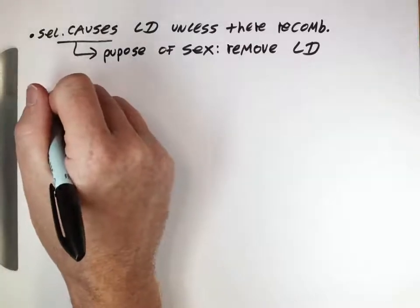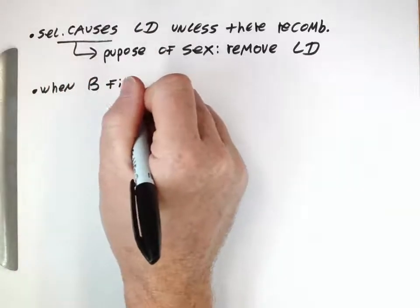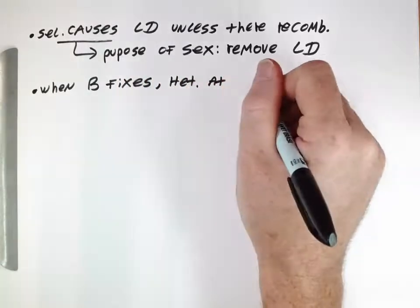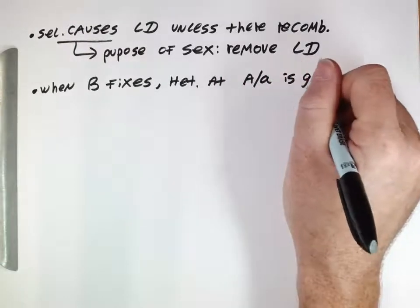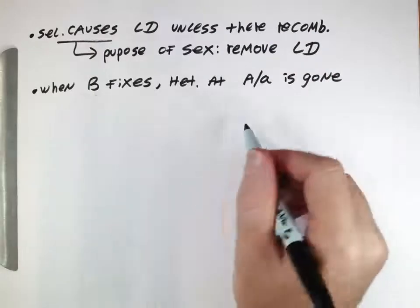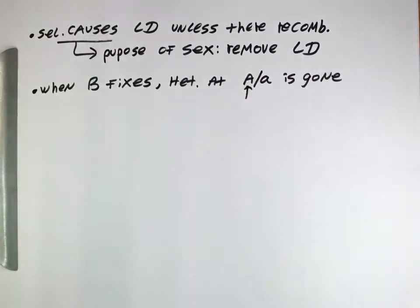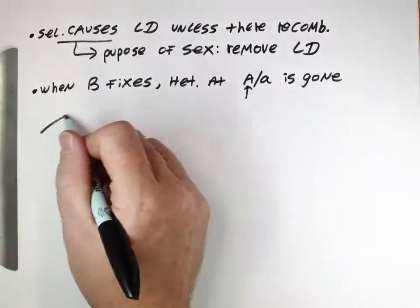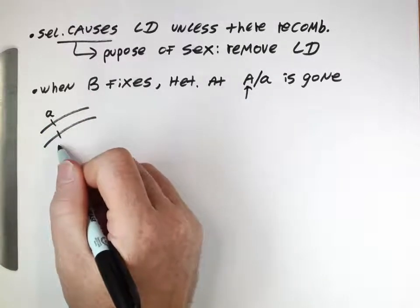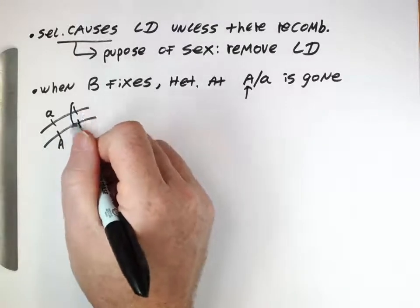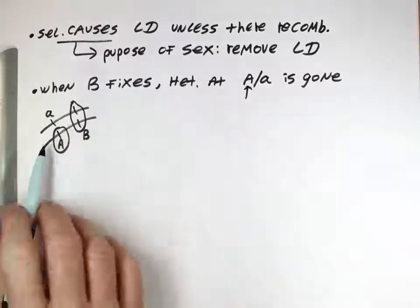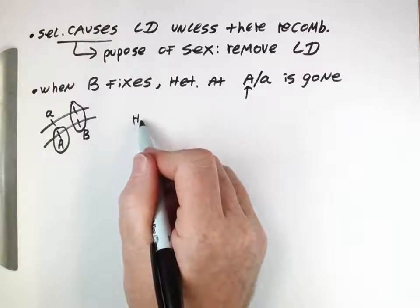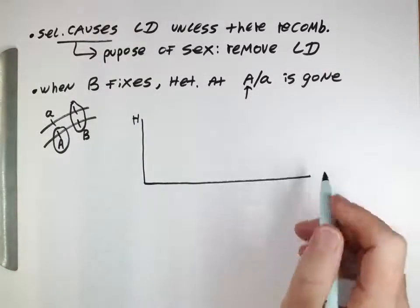A second thing that we can think about is when this capital B allele fixes, then the heterozygosity at the nearby locus is gone. So the capital B allele, if it was associated with the capital A allele, if there's no recombination, then this thing fixing is the same thing as this thing fixing. And so where we used to have a locus that had multiple alleles, when this thing fixes, this thing will fix and we will have lost that allele.